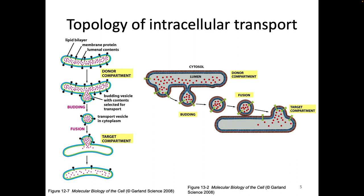When we look at proteins moving around in vesicular compartments, there is a certain topology that we often see. Here you can see a compartment — it could be the ER, the Golgi, or an endocytic compartment — with a lipid bilayer. The blue layer touches the cytoplasm and the green layer does not. We've got transmembrane proteins embedded, with the circly part next to the cytoplasm and the pokey part away from the cytoplasm. And there's cargo inside the compartment.